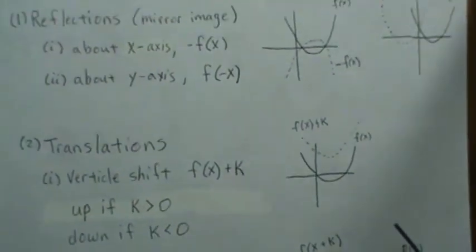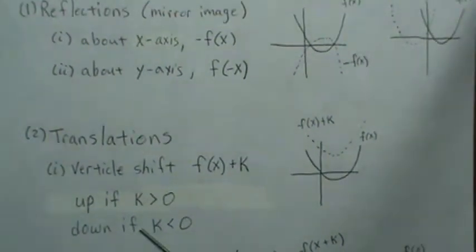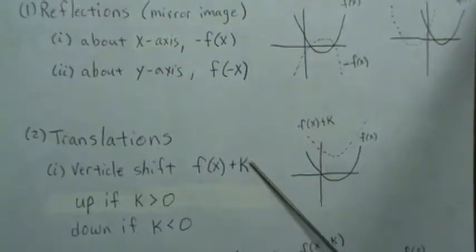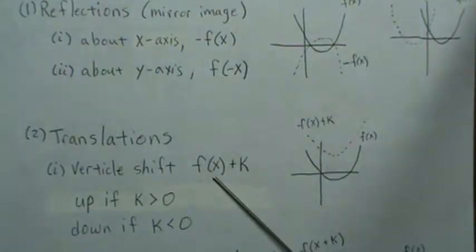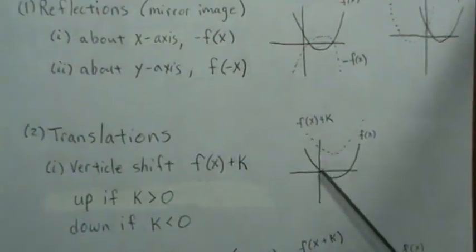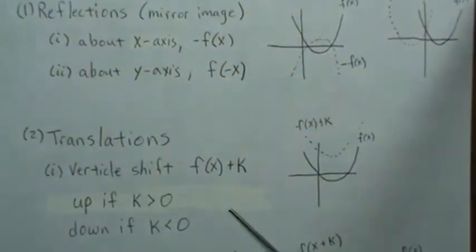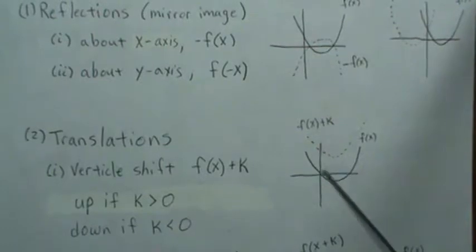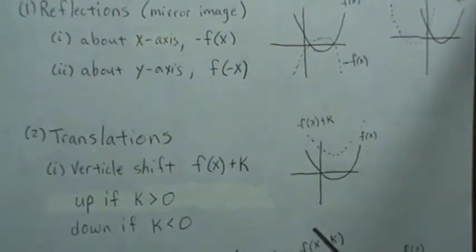Translations shift the graph vertically or horizontally. For vertical shifts, you add or subtract a constant k, giving f(x) + k. It's intuitive: if k is positive you shift it up, if k is negative you shift it down.